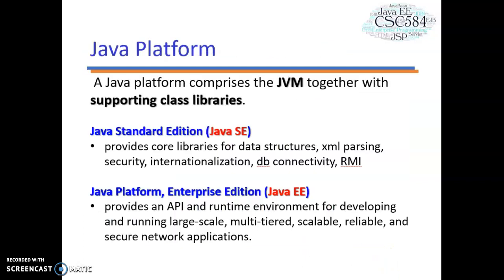All Java platforms consist of a JVM (Java Virtual Machine) and an API (Application Programming Interface). The Java Virtual Machine is a program for a particular hardware and software platform that runs Java technology applications, whereas an API is a collection of software components that you can use to create other software components or applications. Each Java platform provides a virtual machine and API, allowing applications written for that platform to run on any compatible system with all the advantages of the Java programming language.